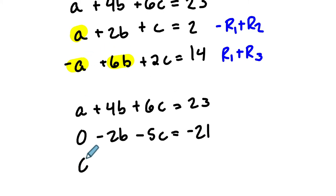In the third row, we'll get a 0 here. A plus negative A is 0. 4B plus 6B is 10B. 6C plus 2C is 8C. And then 23 plus 14 is 37.